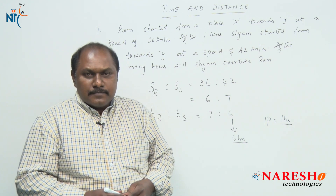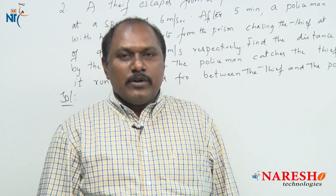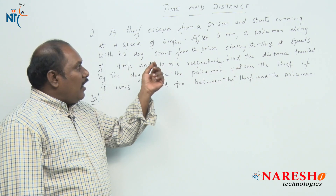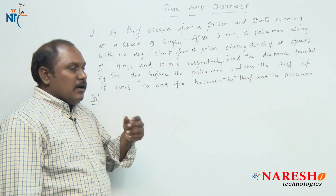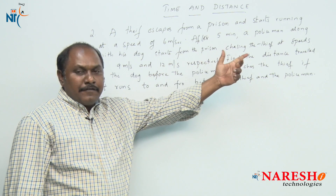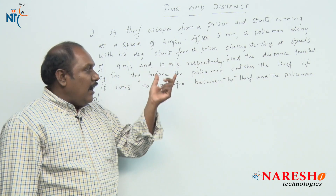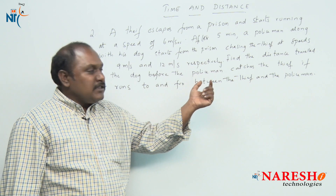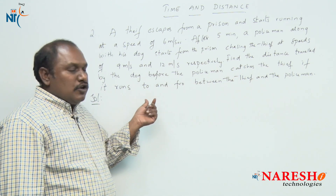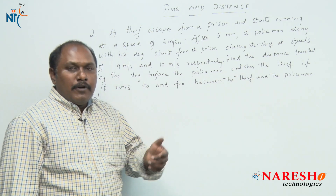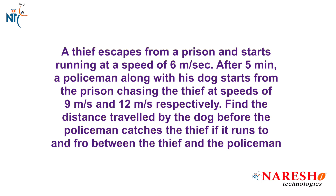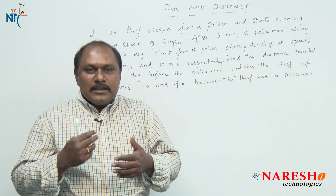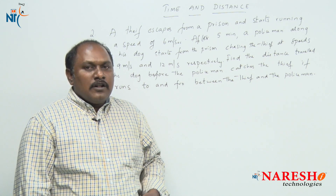Now let us look into one more question. A thief escapes from a prison and starts running at a speed of 6 meters per second. After 5 minutes, a policeman along with his dog starts from the prison chasing the thief at speeds of 9 meters per second and 12 meters per second respectively. Find the distance travelled by the dog before the policeman catches the thief, if the dog runs to and fro between the thief and the policeman. This problem can be solved in two different ways.